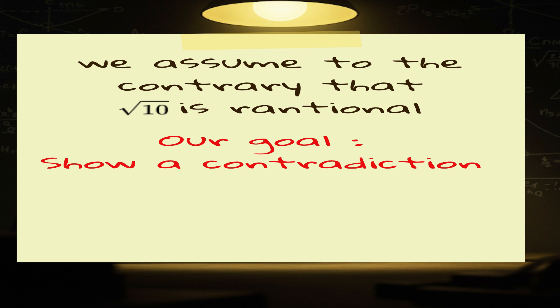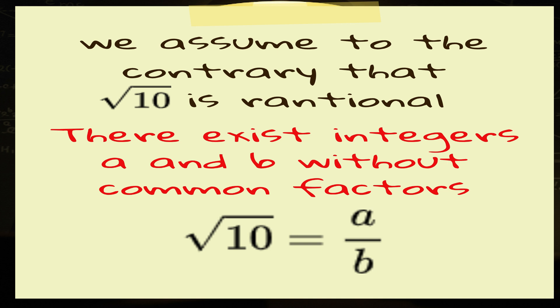Well, if it were rational, we could write it as a nice, tidy fraction, a over b, where both a and b are integers that share no common factors, because let's be real, we like our fractions simplified and drama-free.